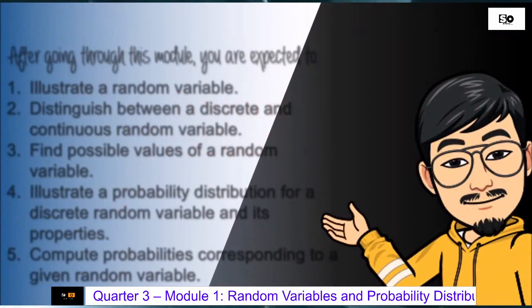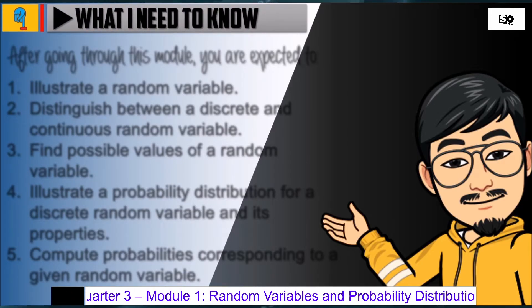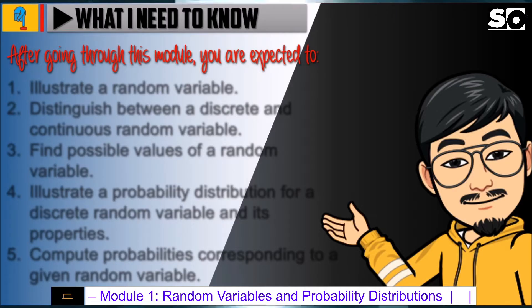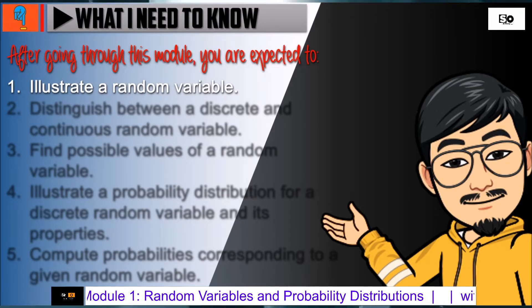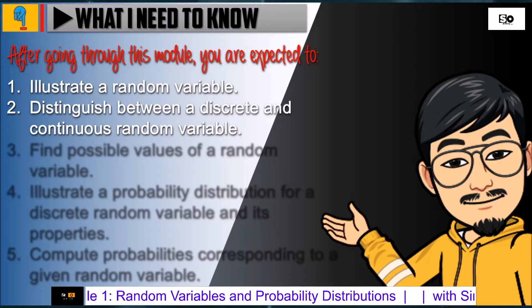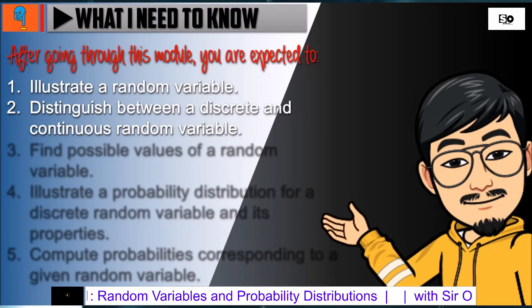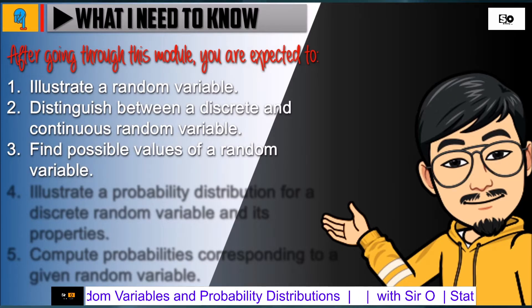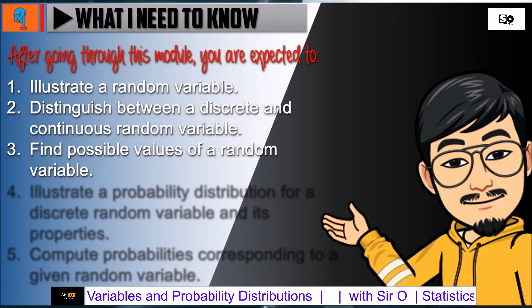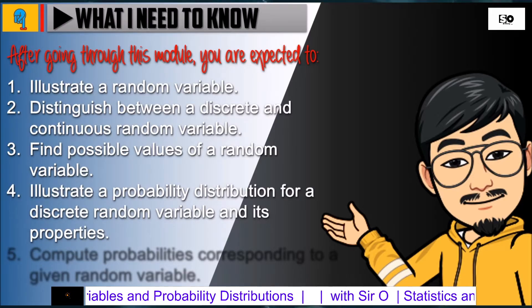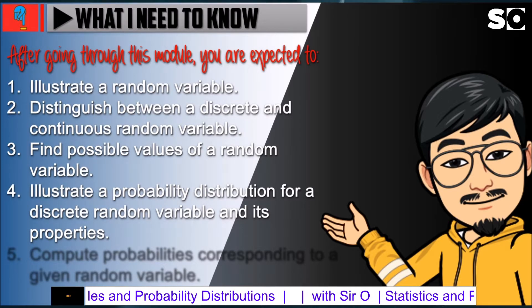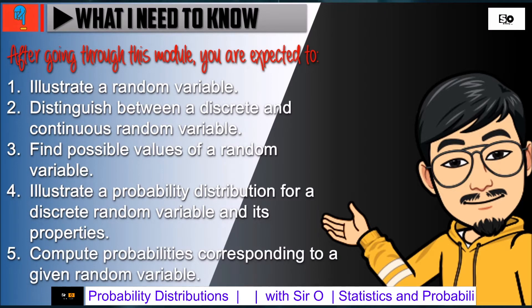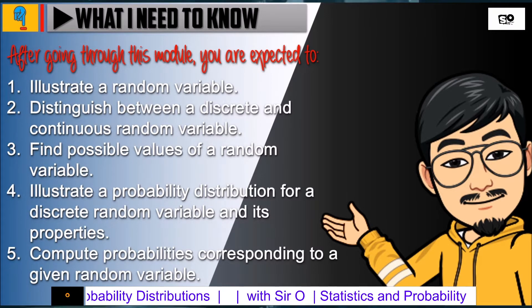After going through this module, you are expected to: Number 1, illustrate a random variable; Number 2, distinguish between a discrete and continuous random variable; Number 3, find possible values of a random variable; Number 4, illustrate a probability distribution for a discrete random variable and its properties; and last, compute probabilities corresponding to a given random variable.